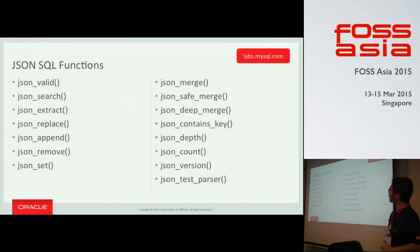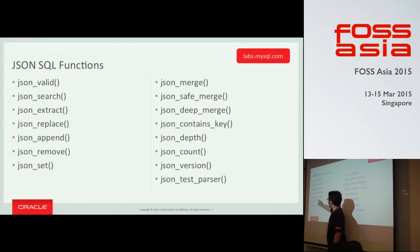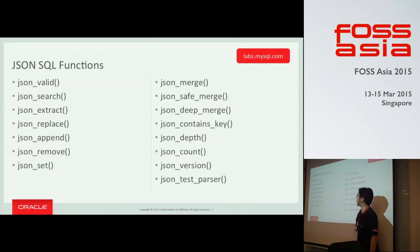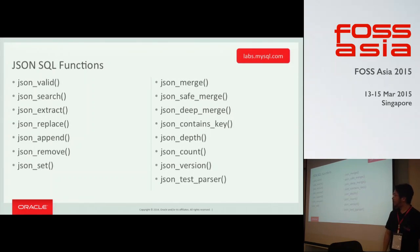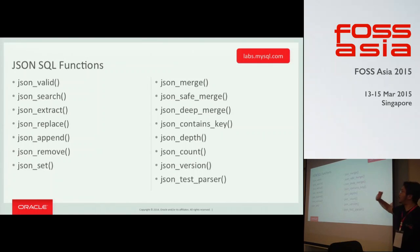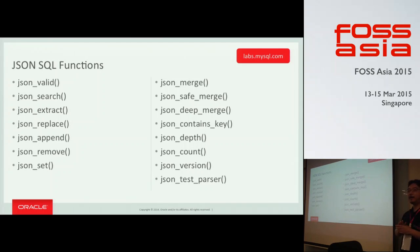Another thing we are currently working on is JSON SQL functions. You can store JSON into MySQL Server and then search, replace records, append information, or modify components within JSON. There are a lot of things you can do, like merging different components of documents into one. These are also available at labs.mysql.com. With these functions, if you store JSON data and want to replace some components, you can just use those functions. So MySQL can be kind of a document database — designed for MySQL Server.